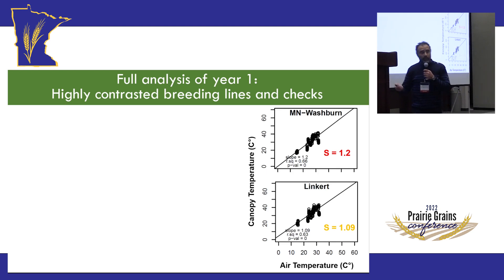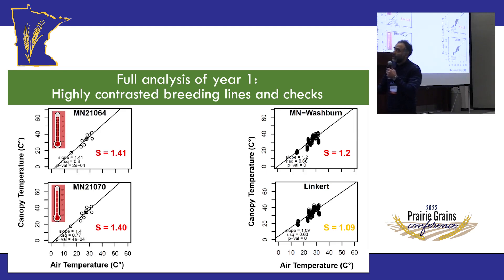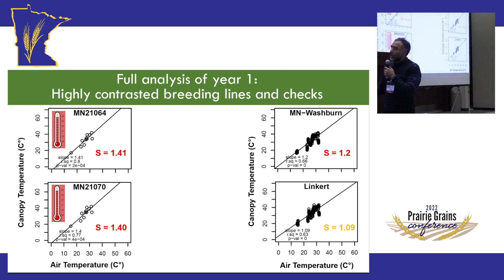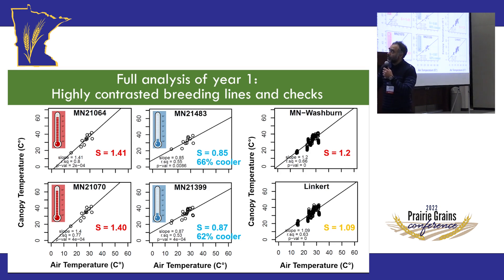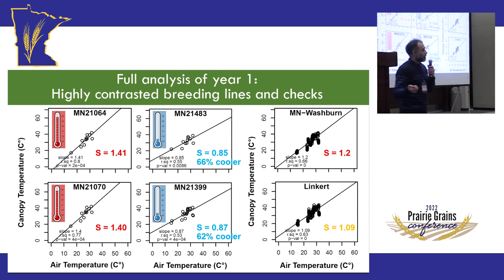Across more than 500 lines, we look at the extremes — because breeding happens on the extremes. Some genotypes do a poor job at canopy cooling; one has a slope of 1.4, meaning it's 40% warmer than the surrounding air. On the other end, we can identify promising genotypes where the slope is less than one, meaning they actually cool themselves relative to the surrounding air. These are 60% cooler compared to the worst performers.